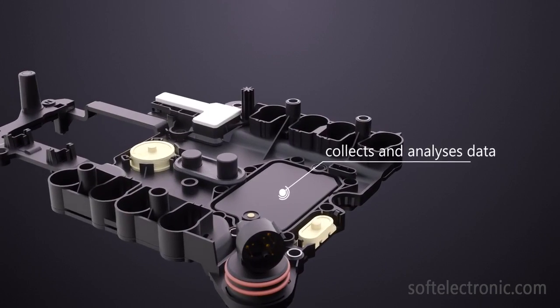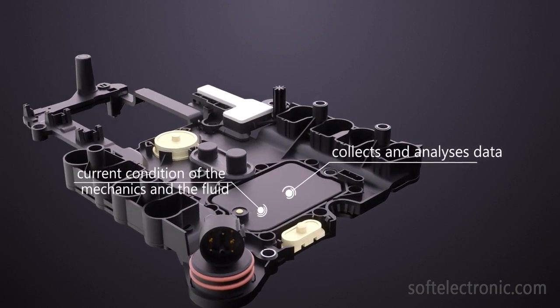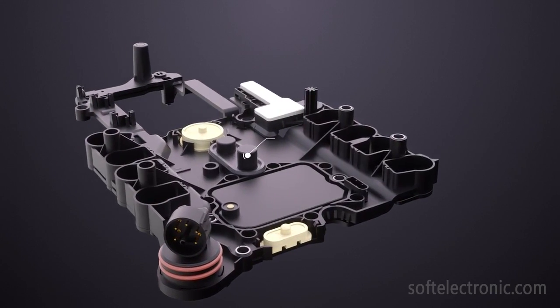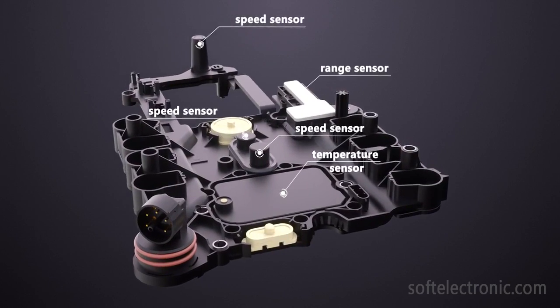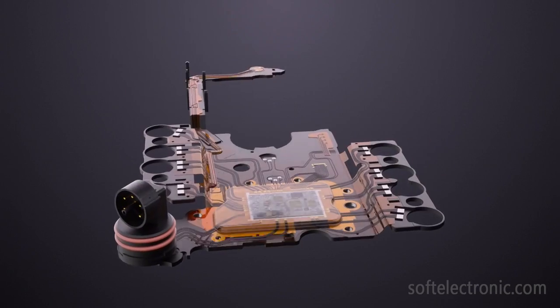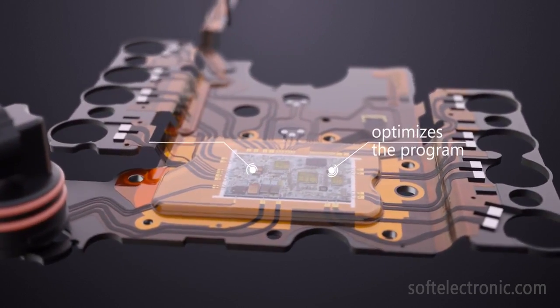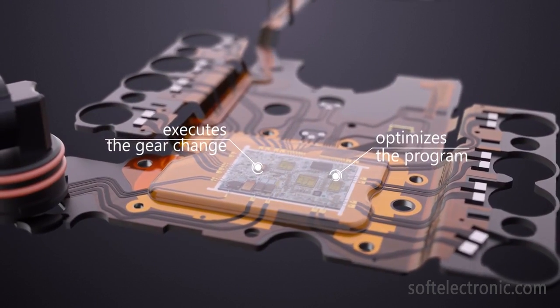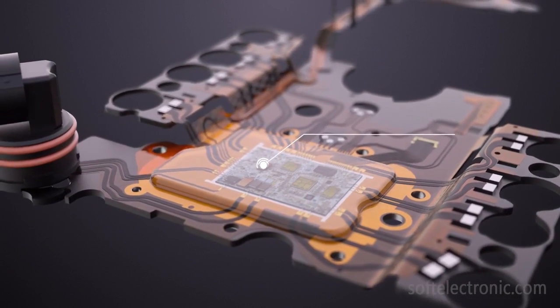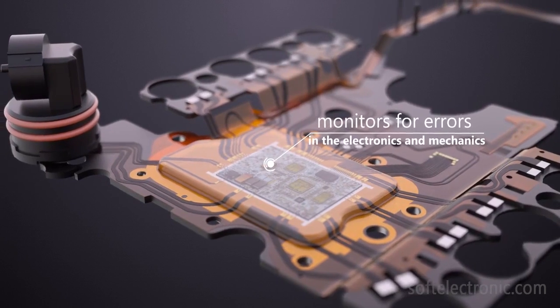The control unit collects and analyzes data about the current condition of the mechatronics and fluid via speed sensors, temperature sensors, and pressure sensors. From the gathered information, the control unit optimizes and executes the program for gear changing and at the same time monitors for errors in the electronics and mechanics.